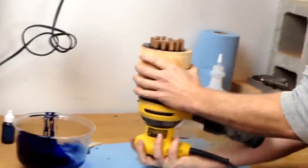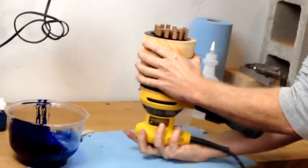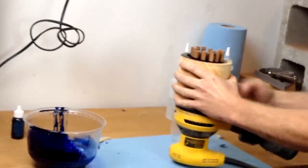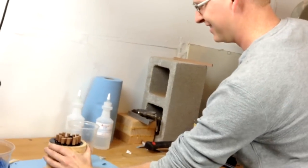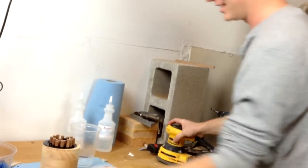Vibration works wonders to consolidate concrete, so my hope was that it would also work with Alumilite. Un-Velcroing the sander from the bottom without spilling the resin was an unforeseen challenge.